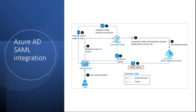Azure Active Directory supports single sign-on by using SAML 2.0. When a user authenticates an application through Azure Active Directory by using SAML, Azure AD sends a token to the application. The application then validates and uses the token to sign in the user instead of prompting for a username and password.